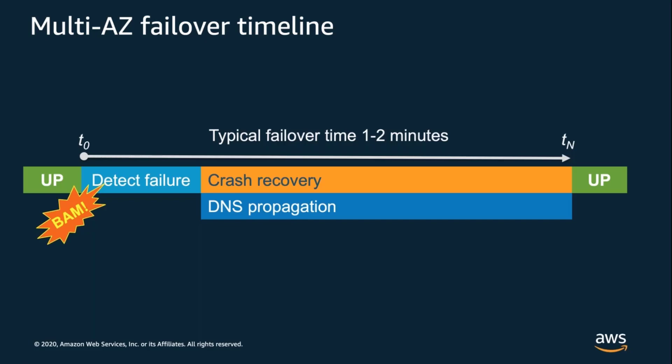Applications that use connection pools work really well here since the pool automatically retries connections until they succeed, allowing them to resume work as soon as the listener is up. As soon as the database is open and the listener is up, clients that resolve the new IP address for the endpoint are able to connect — in most cases that process takes one to two minutes. RDS multi-AZ can offer a 99.95% SLA, typically operating with an RPO of zero and an RTO of one to two minutes.